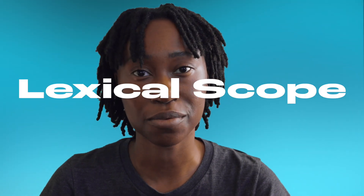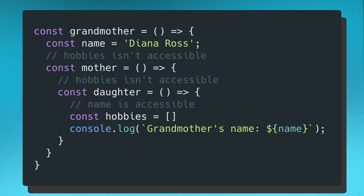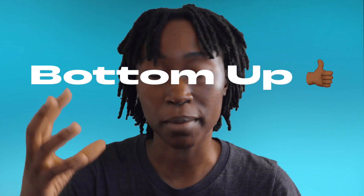Now let's look at lexical scope. Lexical scope in JavaScript is the concept of having nested scopes where the child scope has access to its parent scope, which has access to its parent scope — and that bubbles all the way up to the global scope. In this code block, I have a method called grandmother with a name constant set to Diana Ross, a method inside it called mother, and inside mother another method called daughter. Inside my daughter method, I'm able to print out grandmother's name even though I'm in a different function scope. However, neither grandmother nor mother have access to daughter's hobbies array, because scope access is a bottom-up approach rather than top-down.